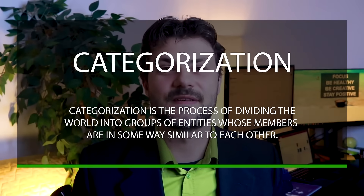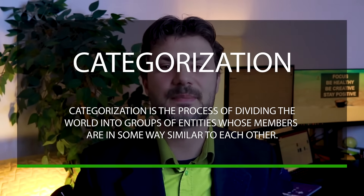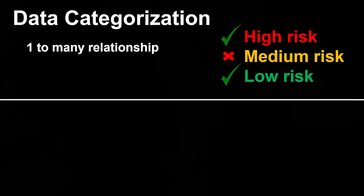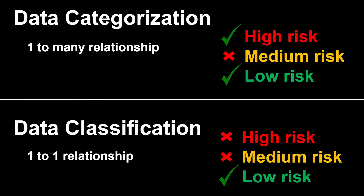What about data categorization? Categorization is the process of dividing the world into groups of entities whose members are in some way similar to each other. So data could be categorized as high sensitivity, medium sensitivity, and low sensitivity data. The key difference is that these groups in data categorization don't need to be mutually exclusive — but in data classification, they have to be. Within data classification, you have to be in one or the other. Within data categorization, you can be in one or multiple at the same time.